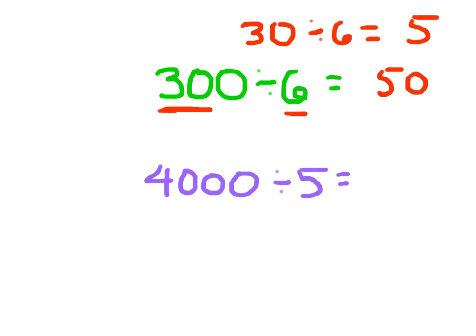Here's a similar problem: 4,000 divided by 5. We start with the basic fact — hopefully you said 40 divided by 5, which is 8. That was 40 hundreds, and that's why with the two zeros here we can say the answer is 800. So 4,000 divided by 5 is 800.